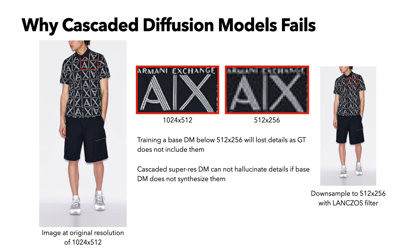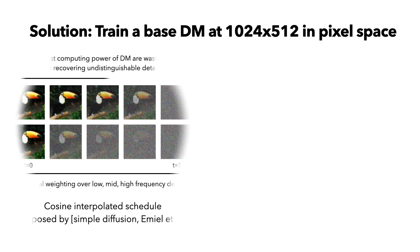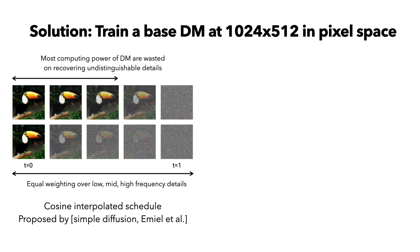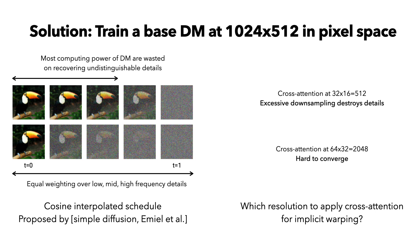This analysis naturally leads to our solution: to train a single-stage diffusion model in the pixel space at its highest resolution. However, this task is very challenging, and we found two critical designs to make it work. The first one is to replace the original cosine noise schedule with the cosine-interpolated noise schedule proposed by simple diffusion, which can better utilize the representation power of diffusion models. The second design choice is which resolution to apply cross-attention for implicit warping. We found cross-attention at a lower resolution will destroy details due to excessive downsampling, while cross-attention at a higher resolution is hard to converge due to the long context length.